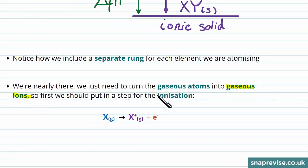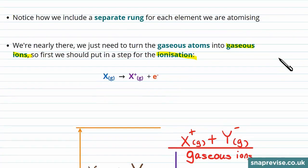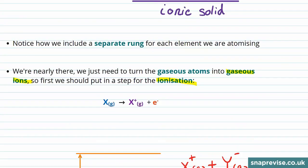So at this point we should put in the step for the ionization of X. This is where we provide enough energy to separate an electron from X, leaving it as a positive ion.